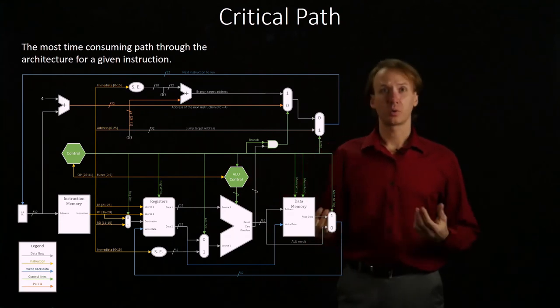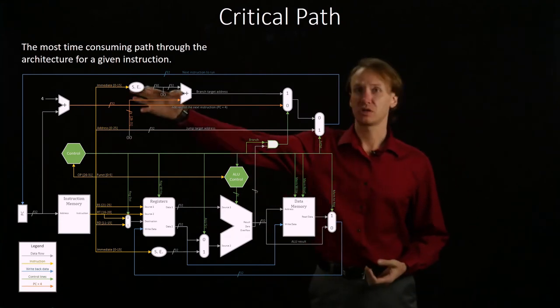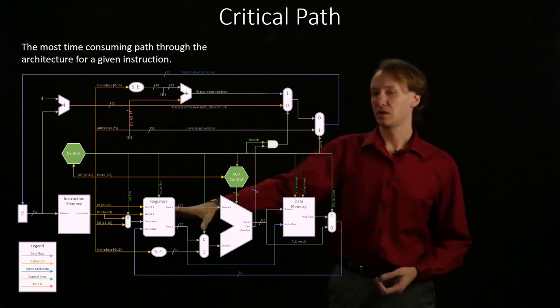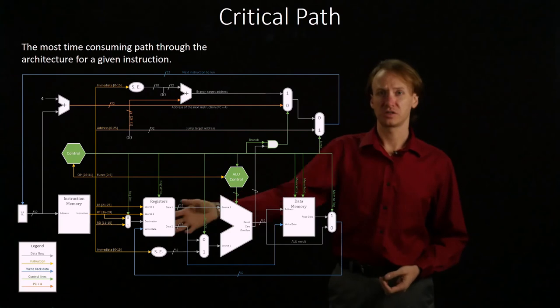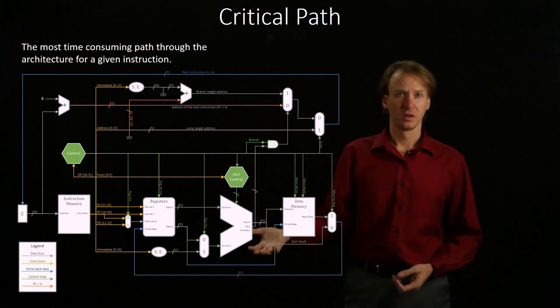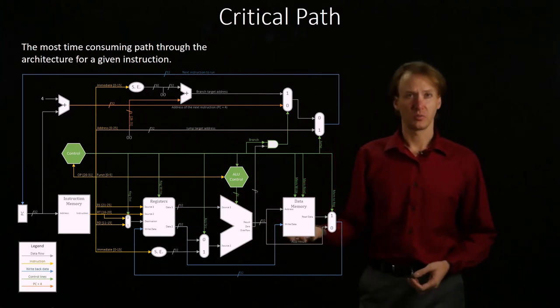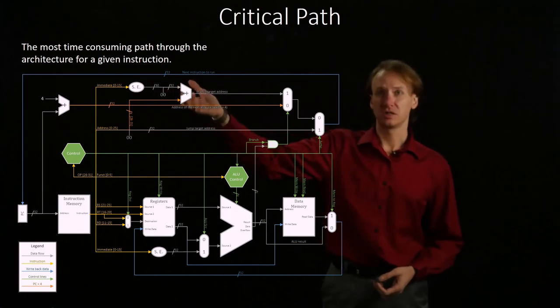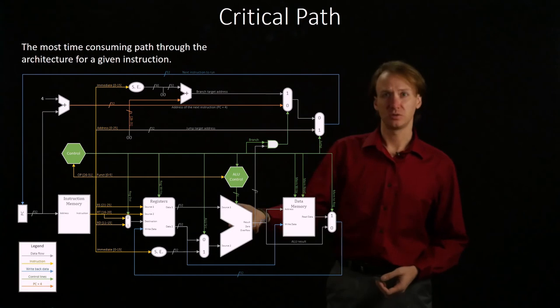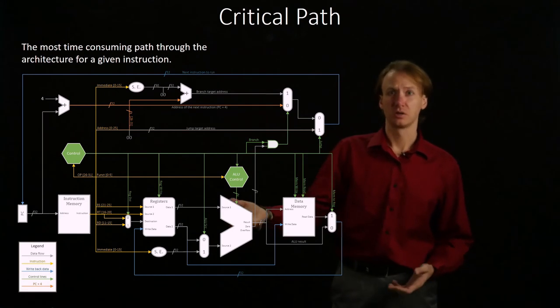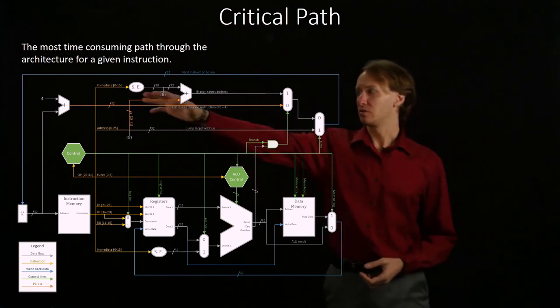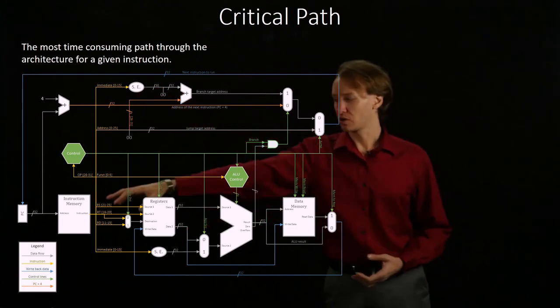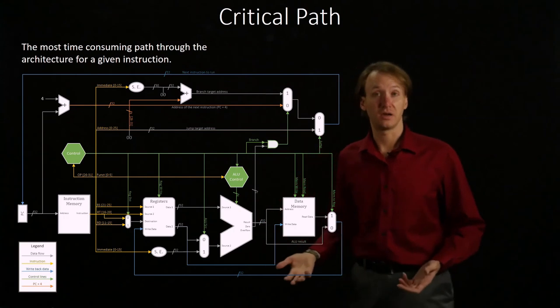If my hardware was really horrible, I could potentially be spending more time up here with this sign extension unit and this adder than down here with registers and ALU. But you would have to have some really weird hardware that somehow manages to take longer to do an addition operation than it does to do a subtraction operation. The hardware up here is going to be a whole lot simpler. Our critical path is generally going to involve the registers of the ALU.